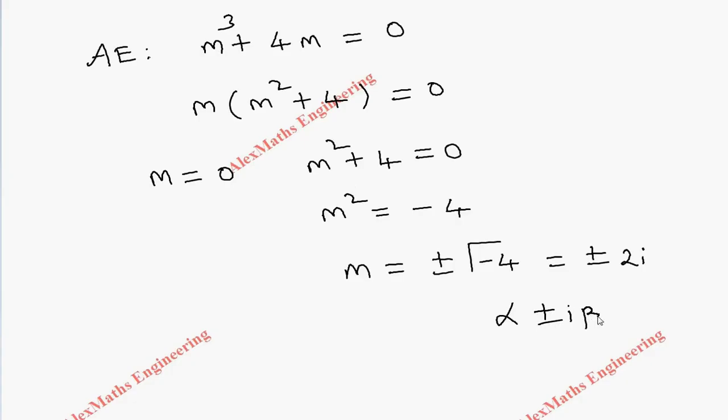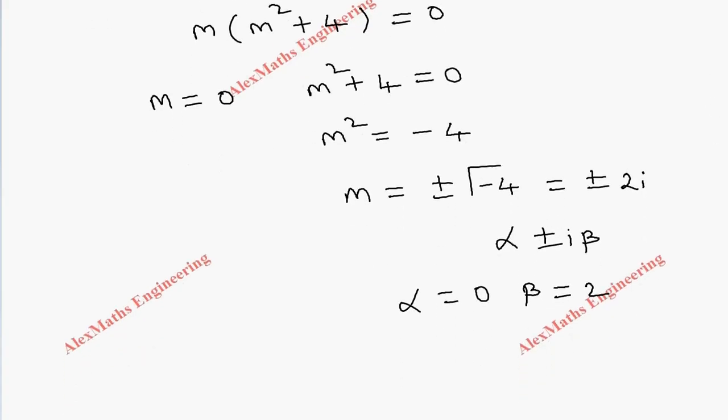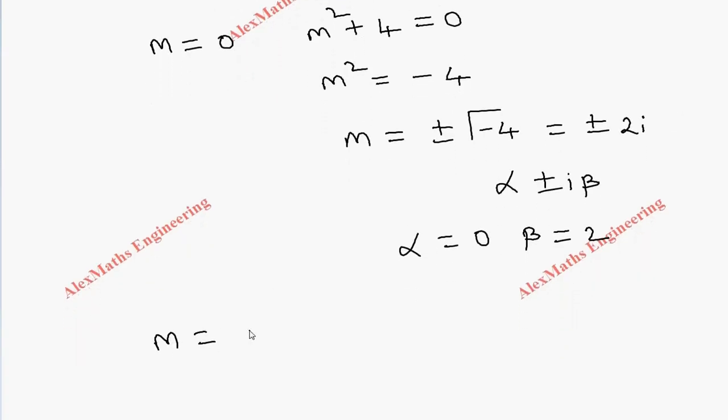So α is 0 and β is 2. We got three values for m: one is 0, and another two values are 0 ± 2i.